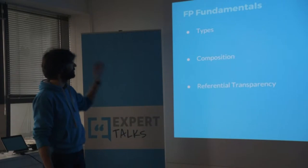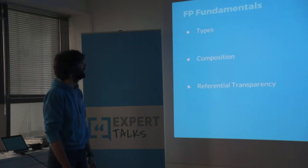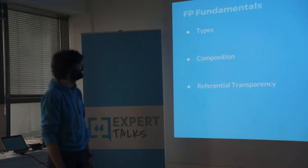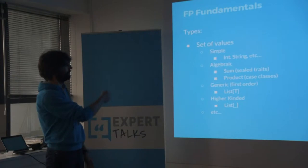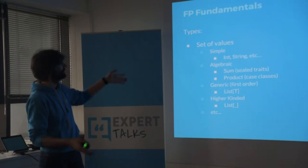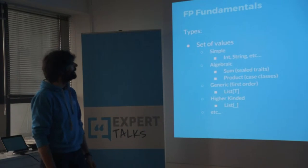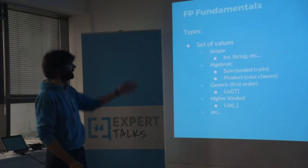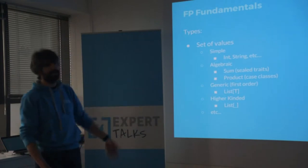In terms of FP fundamentals, I've chosen these three: types - because it's Scala and types are important; composition, how we mix and match pieces of things; and referential transparency. What's important about types is that they are defined as a set of values. They can be simple like an int, which is a bunch of numbers, or strings. They can be algebraic, like sum or product types, they can be generic, first order, or higher-kinded, and there are structural types - there are a lot of types in Scala.